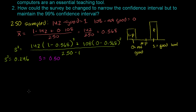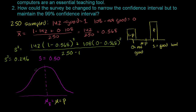We are sampling from some sampling distribution of the sample mean. It has some mean, and the mean of the sampling distribution of the sample mean is actually going to be the same as the population proportion — we've seen this multiple times. The standard deviation of the sampling distribution is equal to the standard deviation of our original population divided by the square root of the number of samples — so divided by the square root of 250.